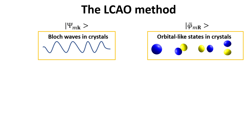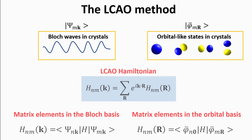We begin by recalling the relation between the Hamiltonian matrix elements in the Bloch basis and in the localized orbital basis. The Bloch states are extended plane wave-like states, while the localized basis states are orbital-like, as shown in the figures. In a previous video, we showed how to connect these two pictures by writing the Bloch states as linear combinations of atomic orbitals, or LCAO for short. As a consequence, the Hamiltonian matrix elements in the Bloch basis are connected to those in the orbital basis through the equality highlighted in the blue box.